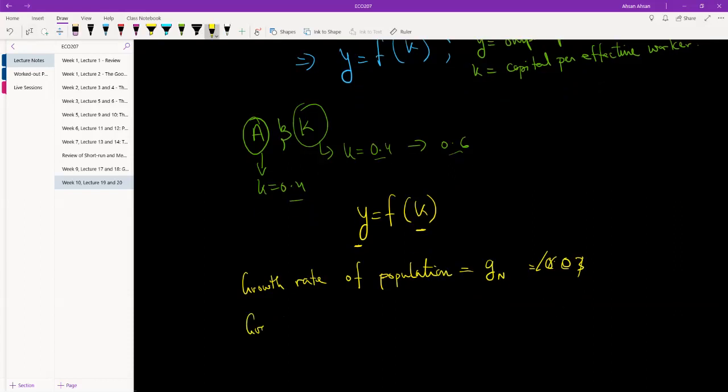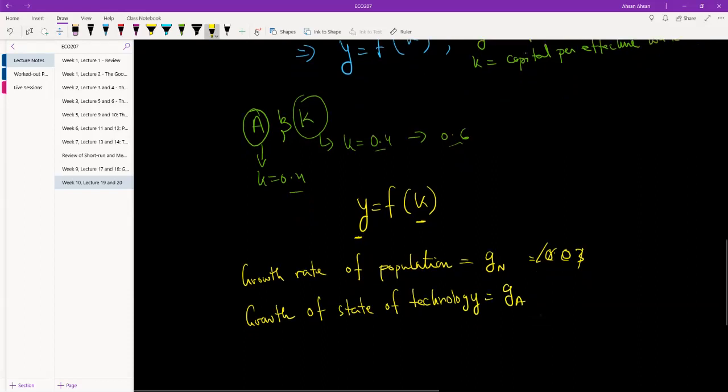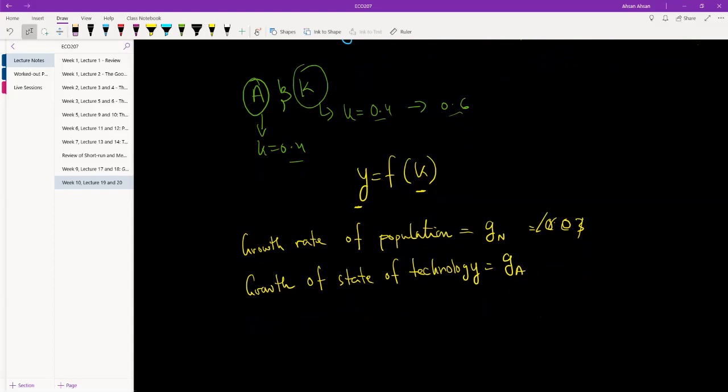And we're going to assume that growth of state of technology is ga. So the same thing: if technology is increasing five percent every year, ga is equal to 0.05.